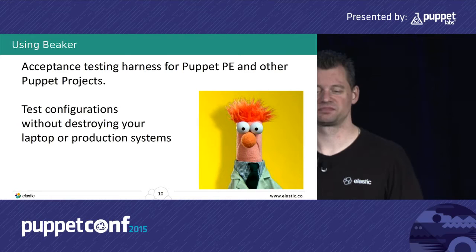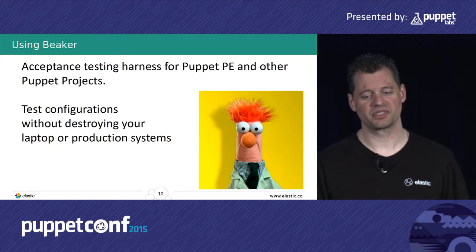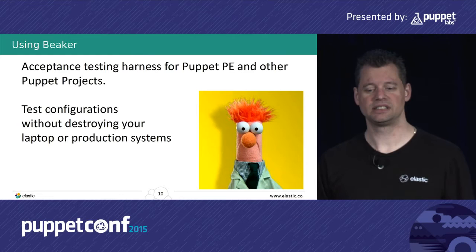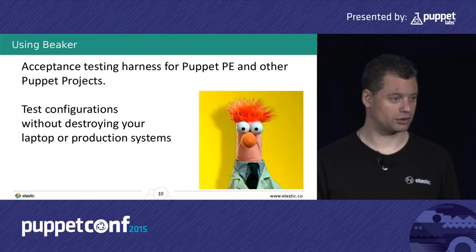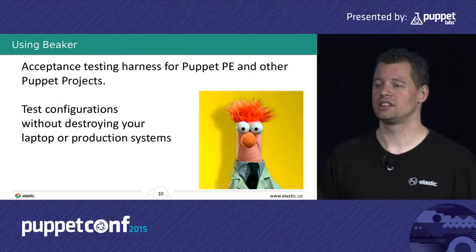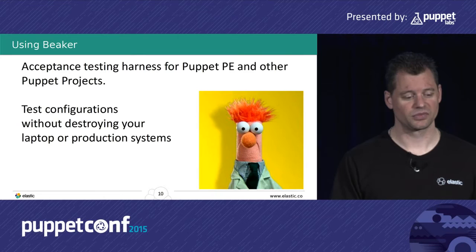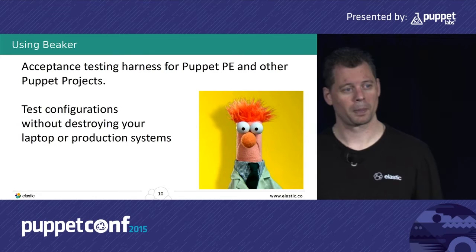So I started to look at Beaker. Beaker is the acceptance testing framework built by Puppet Labs. Alice Nodelman's been writing most of the code. It allows you to test your configurations against a VM without destroying your own laptop or your production system. It connects very well with things like Docker, Vagrant, even EC2 if you prefer. It's very easy to use within your CI environments — Team City, Jenkins, or anything else. And it allows you to test against Puppet Open Source, Puppet Enterprise, and also the new all-in-one agent. So it's very flexible.